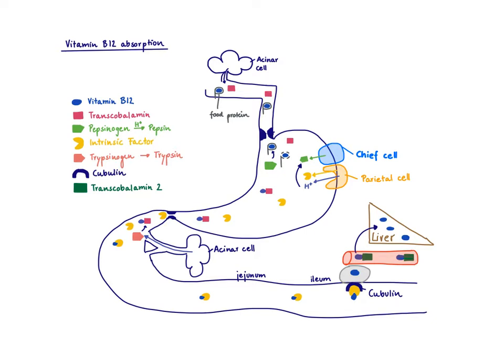We get vitamin B12 from animal products like shellfish or meat. When we eat these, the vitamin B12 is tightly bound to food proteins. In our saliva, we make a molecule called transcobalamine, which would love to bind to vitamin B12 — it acts as a transporter — but it can't at this point because vitamin B12 is already bound to food proteins. So transcobalamine just follows along into the stomach.